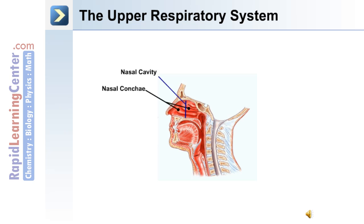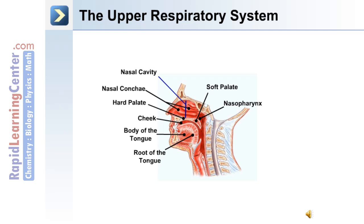The nasal cavity contains the nasal conchae, and the nasal cavity is separated from the mouth through the hard palate and soft palate. At the posterior end of the nasal cavity is the nasal pharynx. Structures of the mouth include the cheek, the body of the tongue, and the root of the tongue.